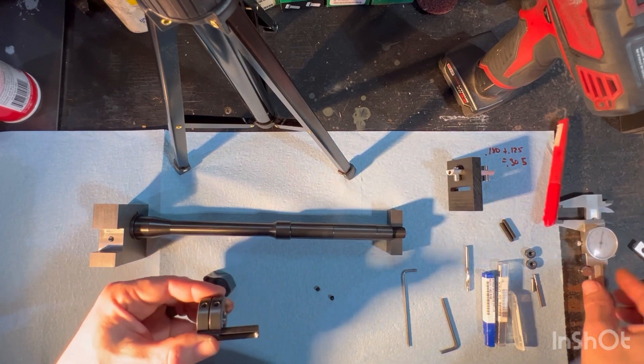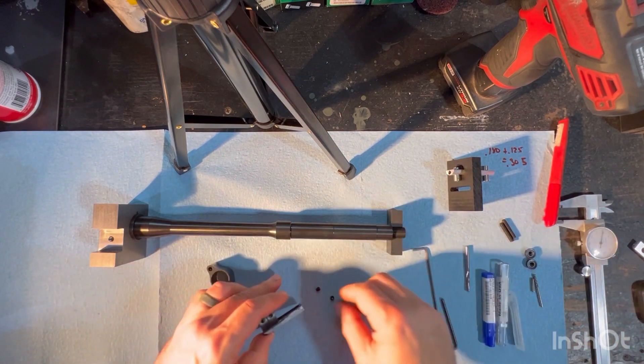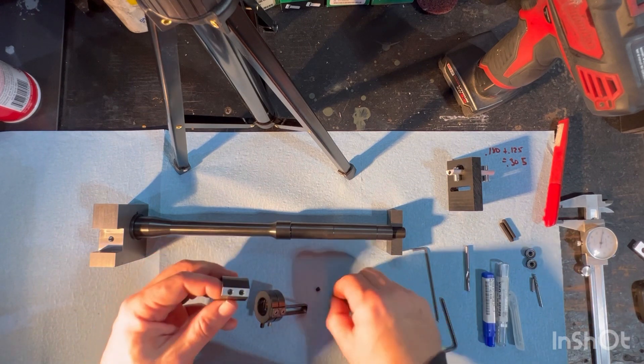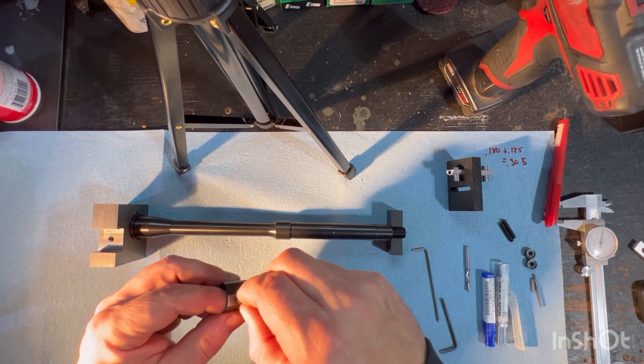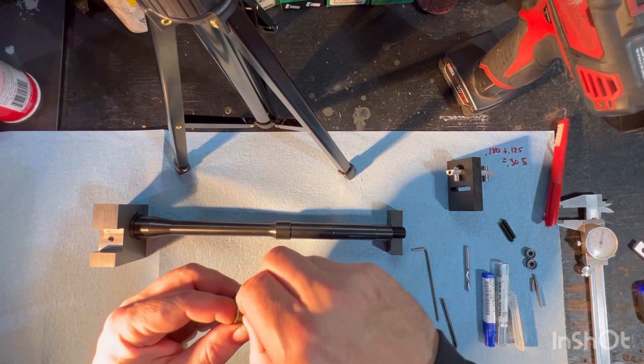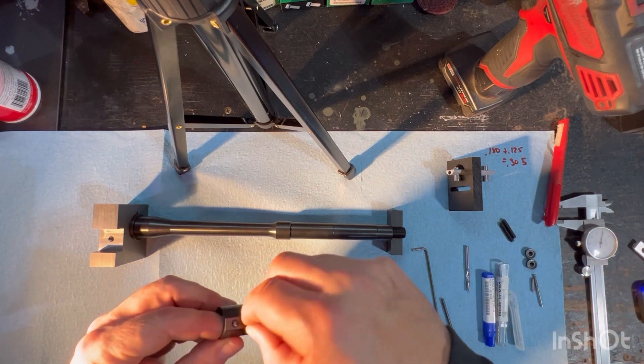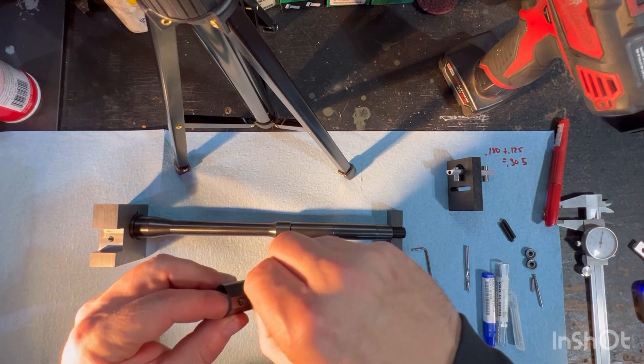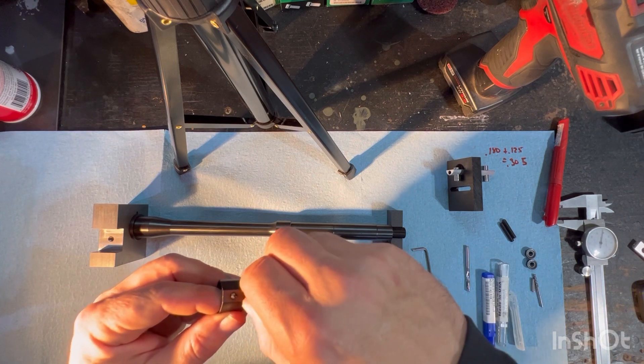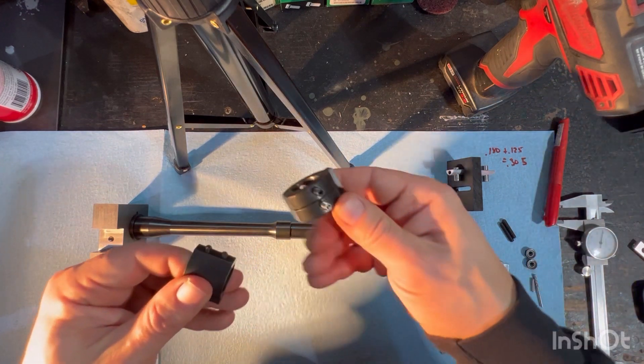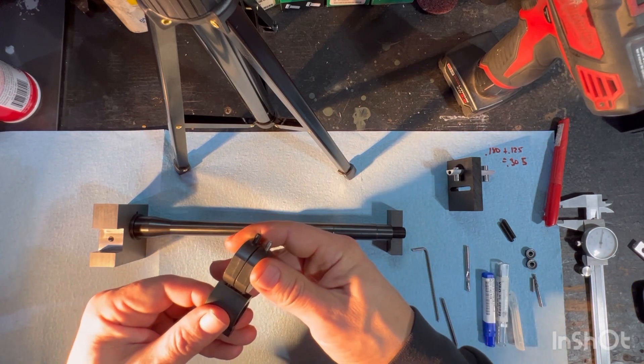And then to check it, what I like to do is take two set screws and actually put them in backwards. Then you can just stick that, make that up, and you can see that that's a match on our spacing.